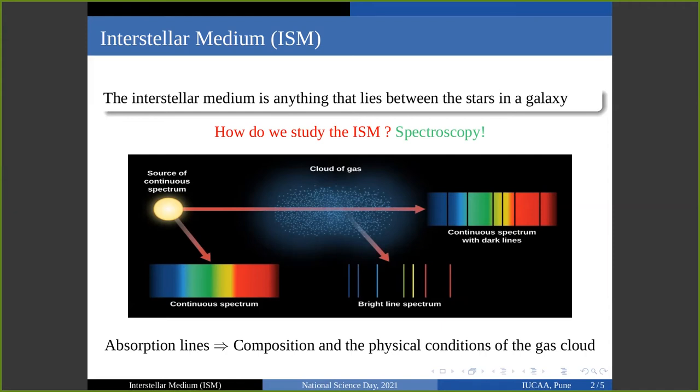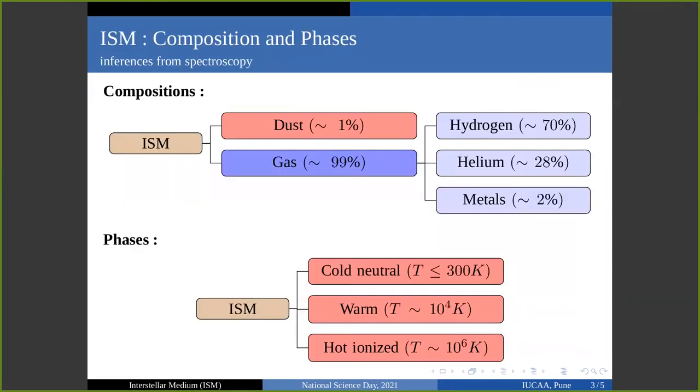So what does spectroscopy tell us about the ISM? It tells you that ISM is primarily composed of gas and dust. About 99% of the ISM mass is in the gas, while only 1% is in the dust.